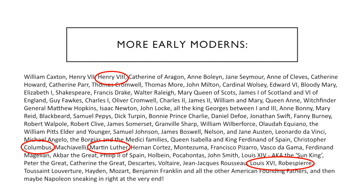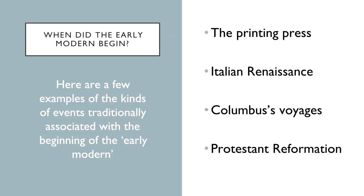Let's start talking about events and transformations associated with the start of our period. When and why did the early modern period begin? We could debate this all day, and there are probably as many views on this as there are early modernists — that's the name that early modern historians give to themselves. Here are a few suggestions based on traditional understandings of what makes the early modern. One thing we could point to is the invention and spread of the printing press, invented by Johannes Gutenberg in Germany in 1440, leading to a subsequent print revolution.